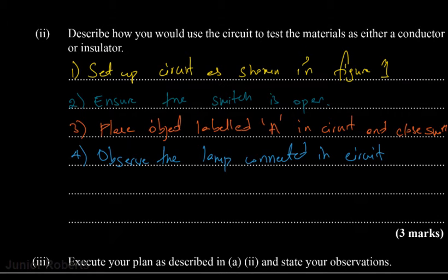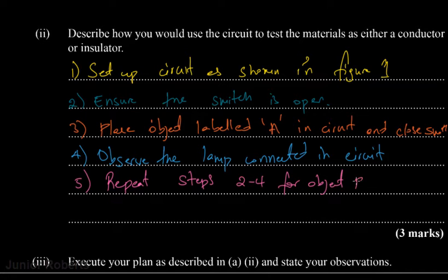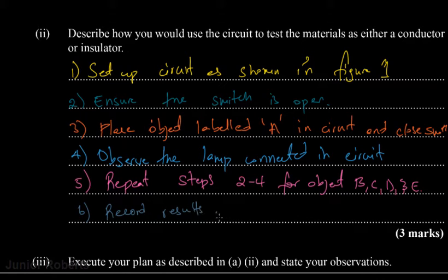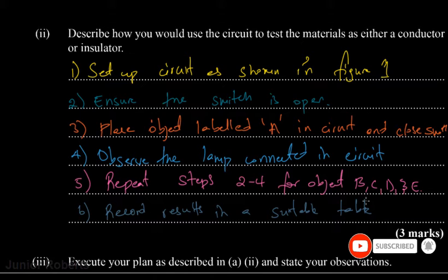Step five: repeat steps two to four for objects B, C, D, and E. Step six: record results in a suitable table. For this table we'll have two columns — one for the object or material (A, B, C, D, E) and the next column for whether or not the lamp glows.